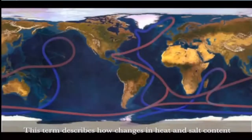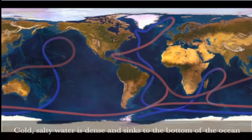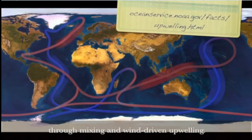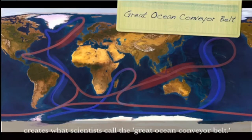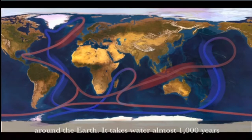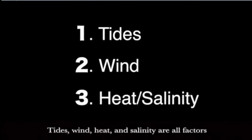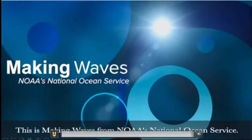But there's one more ocean current force you may have never heard of — it's called thermohaline circulation. Thermo means heat, and haline refers to salinity. This describes how changes in heat and salt content constantly change the density of ocean water. Cold, salty water is dense and sinks to the bottom of the ocean, and eventually returns to the surface through mixing and wind-driven upwelling. On a global scale, this creates the Great Ocean Conveyor Belt, which affects Earth's climate and takes nearly a thousand years to complete.